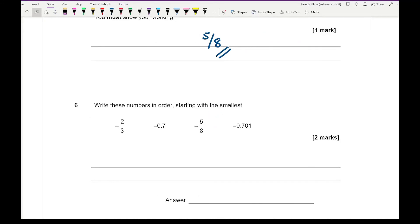Moving on to question 6, write these numbers in order, starting with the smallest. We want to convert all of these into decimals with the same number of decimal places. This is 0.66666, this is -0.700, 5/8 is -0.625, and then we've got -0.701. We're looking for the smallest, which is the one with the biggest integer. The smallest one is -0.701, then -0.7, then -2/3, and then the largest is -5/8.